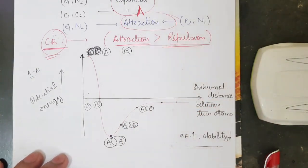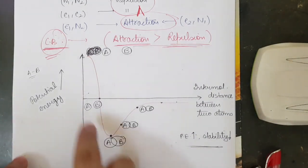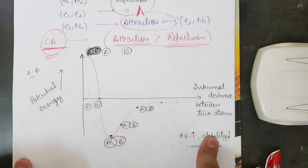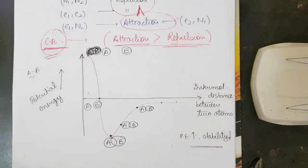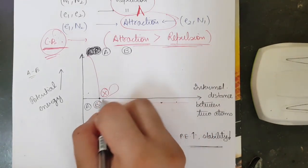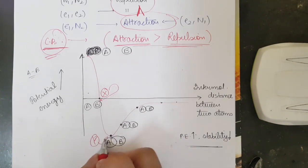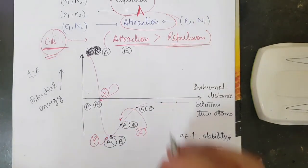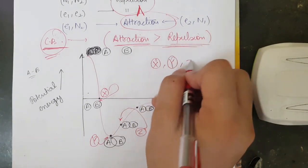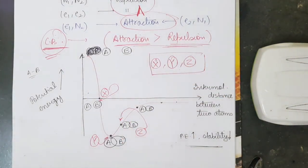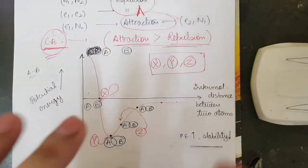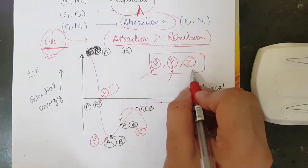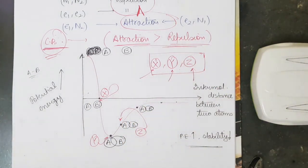So the logic is: if potential energy is growing, stability decreases. The chemical bond will be formed at the position of lowest potential energy on the graph. I am labeling the positions as X, Y, and Z. Tell me in the comment section whether the bond forms at X, Y, or Z — and give the reason. I want to see how many people understand logically. Mention the reason and let's move on.